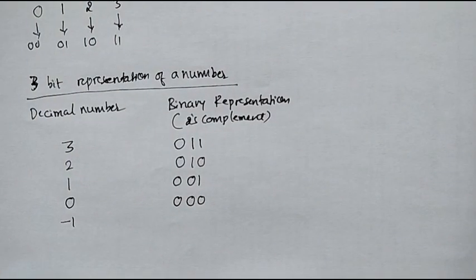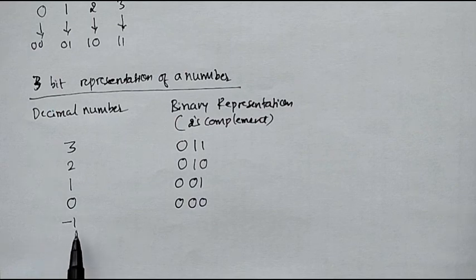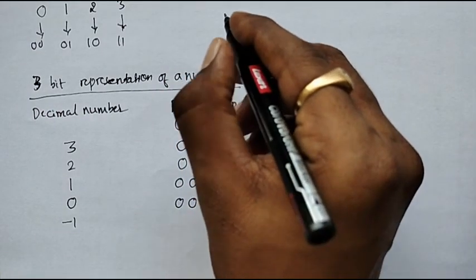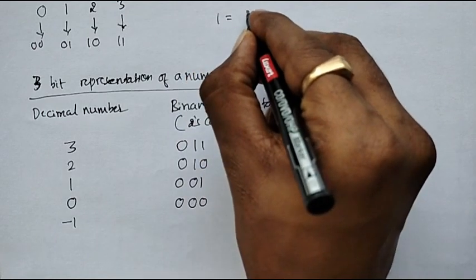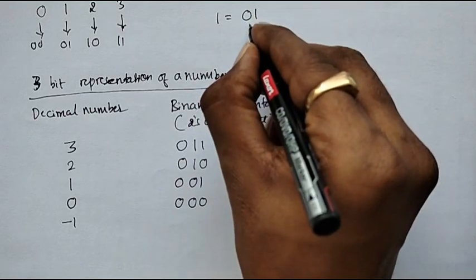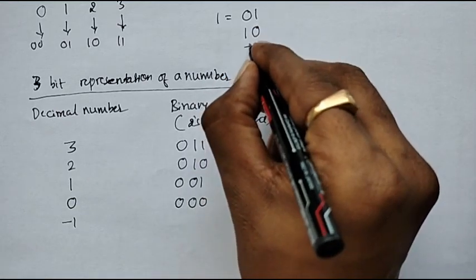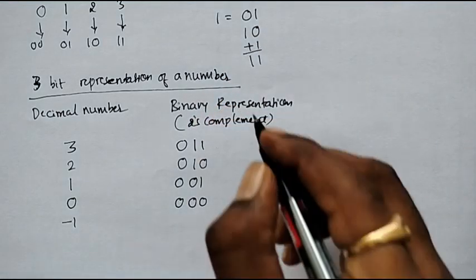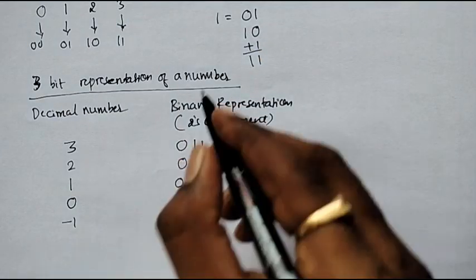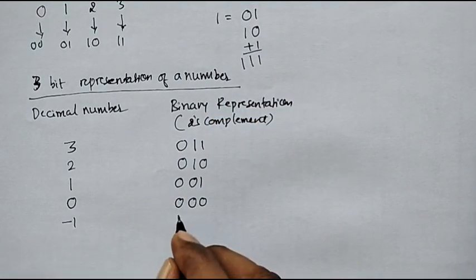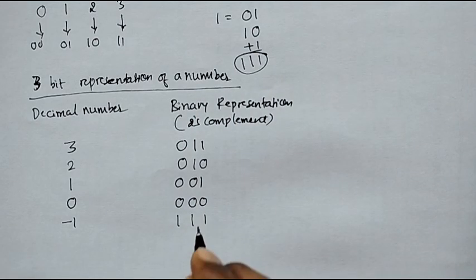Minus 1 can be represented as follows. We know 1 in binary is 01. Taking the two's complement: the one's complement of 01 is 10, and adding 1 gives 11. To indicate the negative sign, we use one more bit — 1. So minus 1 can be represented as 111.